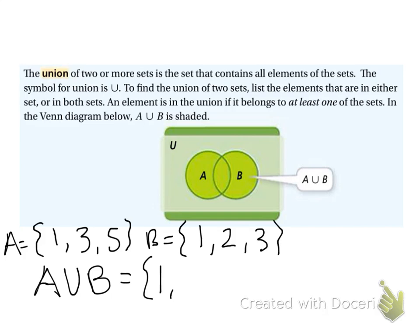In B, there's the number 2, so I'll put 2 in here. Both of them have 3, so I'll put 3. And A, the set A had 5. So that would be my union. I list everything that was in both sets.